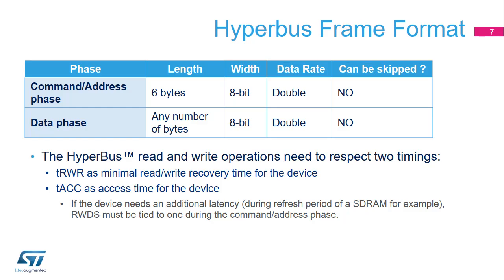The HyperBus frame is composed of two phases: command address phase and data phase. This table summarizes the features of each of these phases. The command and address phase transmits both a command and an address to the memory device. 48 bits are transferred, selecting the data transfer direction, the burst type — linear or wrap — the address space — memory or registers — and the address.